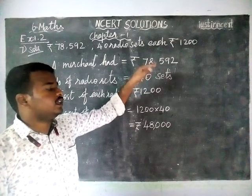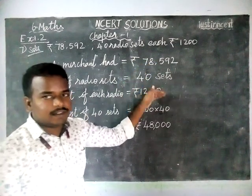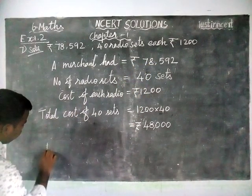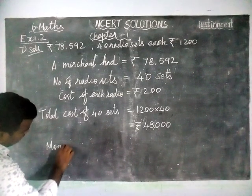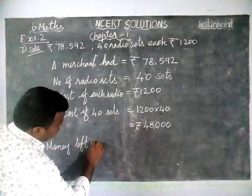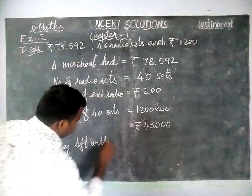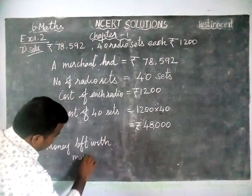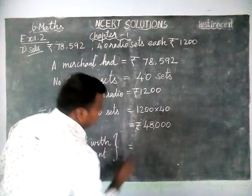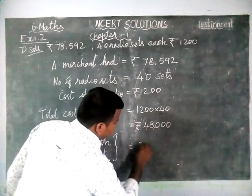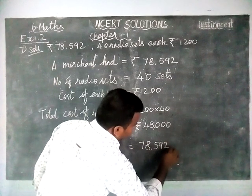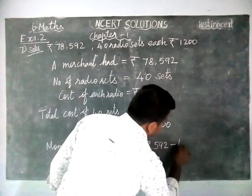Now we have to find how much amount is left with the merchant. Money left with the merchant is equal to 78,592 minus 48,000.